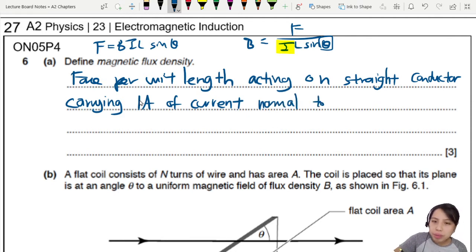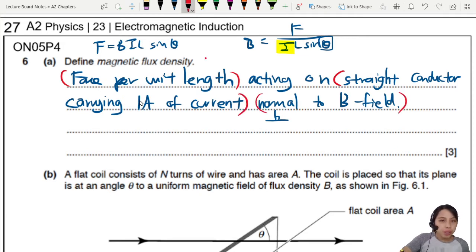Normal means perpendicular to B field or magnetic field. 3 marks as usual: force per unit length, straight conductor carrying 1 amp, and normal to the B field. This one is M1, A1, A1. Please remember how to define your definitions. 3 marks.